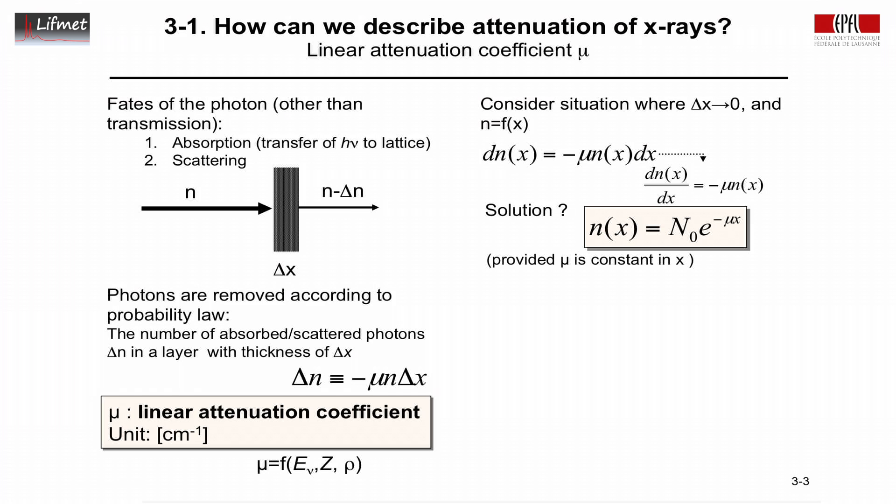In this solution, we have assumed that the linear attenuation coefficient is a constant as a function of position to get this simple solution. This is simplification, but this illustrates how we get from the linear law to an exponential law of photon density.